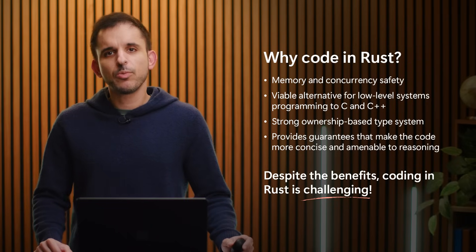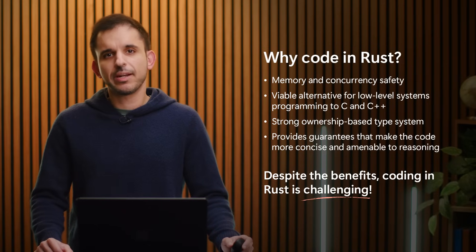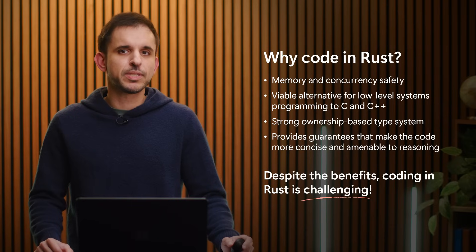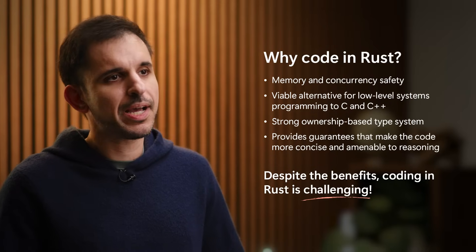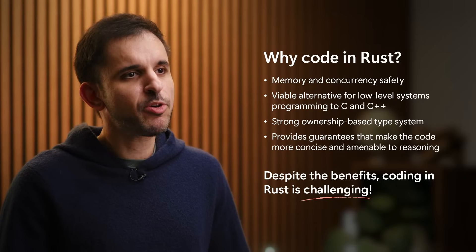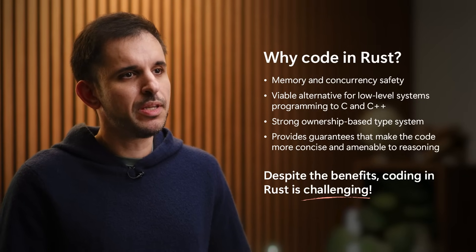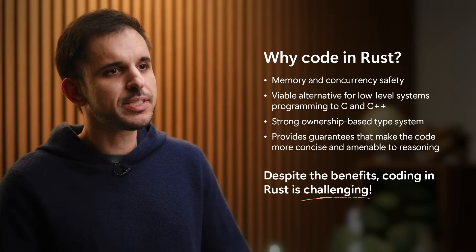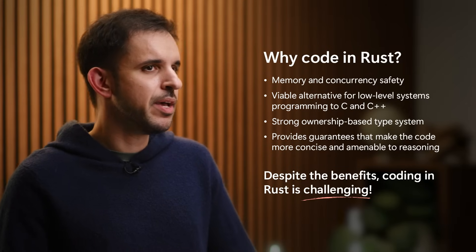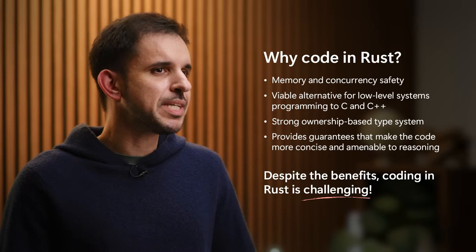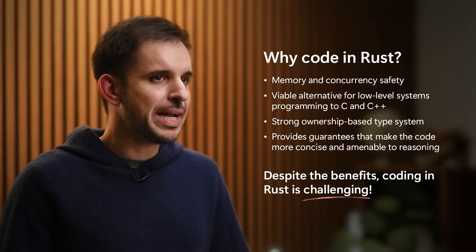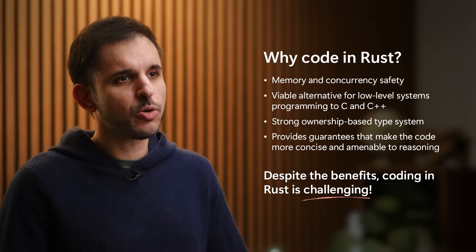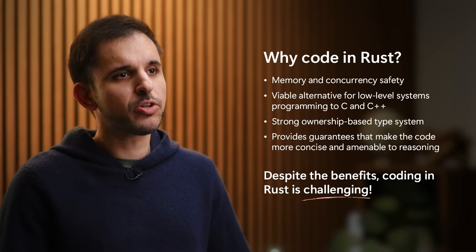The Rust programming language with its memory and concurrency safety guarantees has established itself as a viable choice for building low-level software systems over the traditional unsafe alternatives like C and C++. These guarantees come from a strong ownership-based type system, which enforces memory and concurrency safety at compile time. However, Rust poses a steep learning curve for developers, especially when they encounter compilation errors related to advanced language features such as ownership, lifetime, or traits.